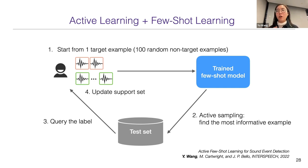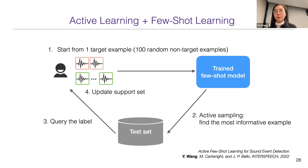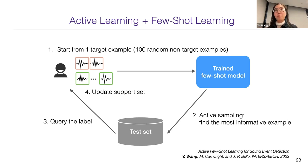We run this iteration about a hundred times to evaluate performance. We show that active sampling achieves better model performance compared to random sampling. With random sampling, returned examples may be redundant, irrelevant, or all negative when looking for rare sounds. Using active sampling is a much better approach, and it also removes the assumption that users can provide meaningful examples upfront — the model searches for meaningful examples for the user. We can start from as few as one example and reach reasonable model performance.